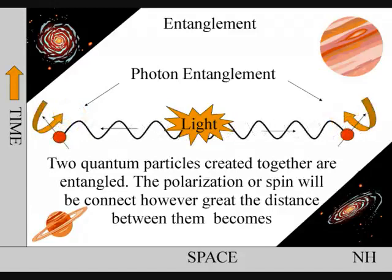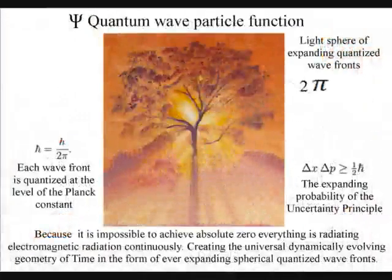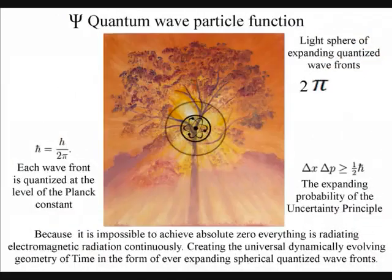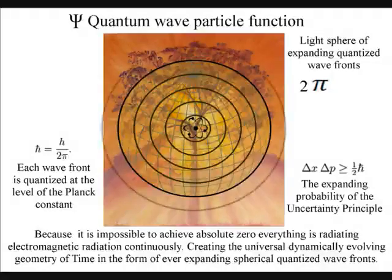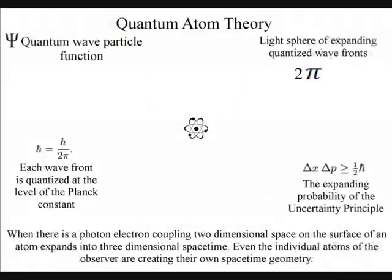In a new theory called quantum atom theory, this problem can be explained. Light has symmetry and geometry that forms Einstein's curvature of space-time, creating quantum entanglement.